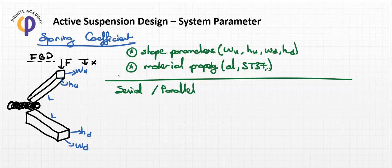If the system is a serial connection, then each element transmits the force value one after another. For example, if we apply force F to the upper link, the upper link must bend, and then the torsional element takes the force related to that. In our system, each element is loaded by this force sequentially, so we have a serial connection.